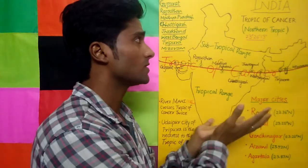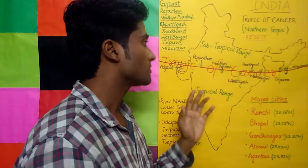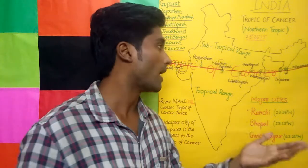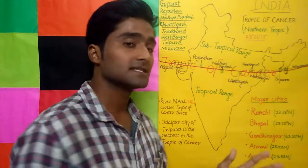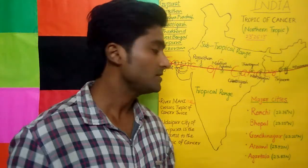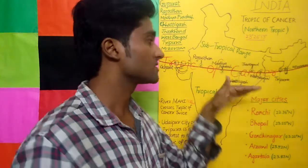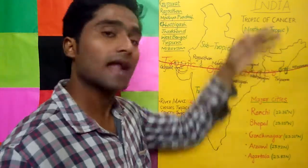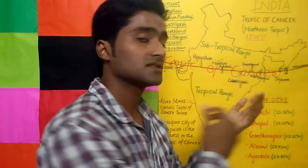The Tropic of Cancer divides India into two parts: the tropical range and the subtropical range. The tropical range has a hot and humid climate with some pleasant weather. The subtropical range starts from the Tropic of Cancer up to the Arctic Circle, and it features six months of cold weather and six months of hot weather.